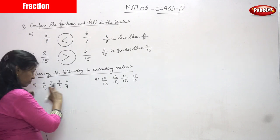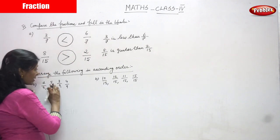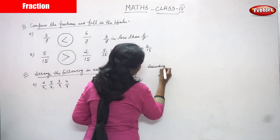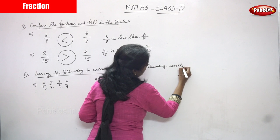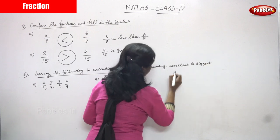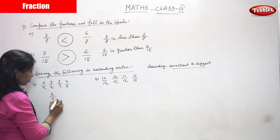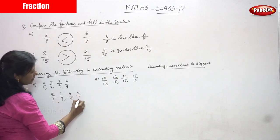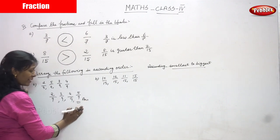Ascending means smallest to biggest, so arrange the numerators in order. The correct ascending order is: 2 by 9, then 3 by 9, then 4 by 9, and finally 5 by 9. This is the right answer for this question.